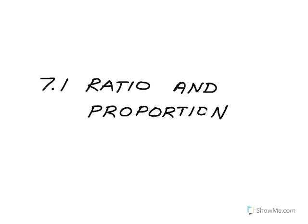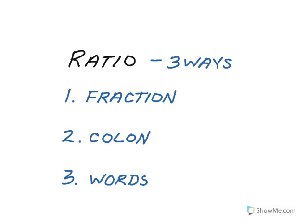This is lesson 7.1 about ratio and proportion. A ratio is just a relationship between two values. And there's three ways that we can write a ratio.